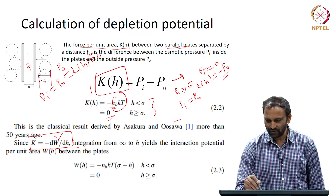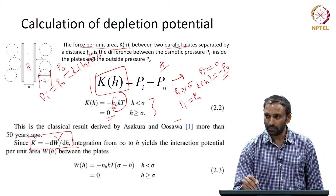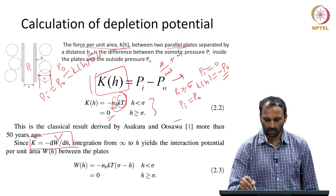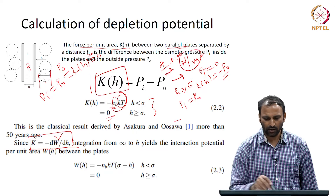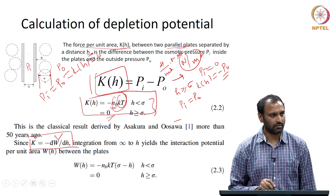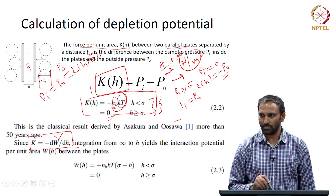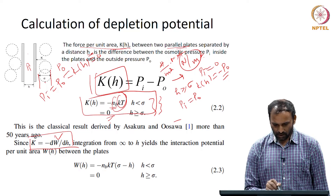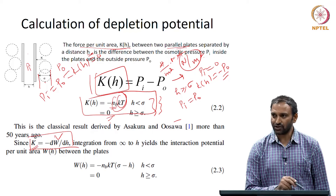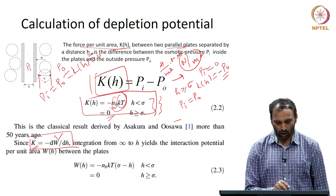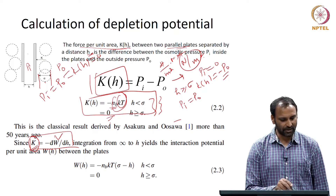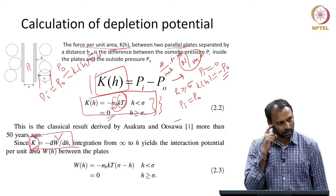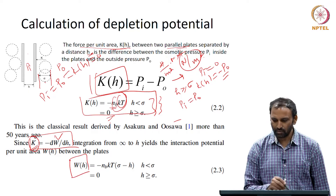So nb will have units of number per volume (per meter cubed), and kbT will have units of energy (Newton meter). The meters cancel so this is consistent — it has units of force per unit area. We know how to write this up. When we want to get W(h), we integrate K with respect to h to get the expression for interaction potential.